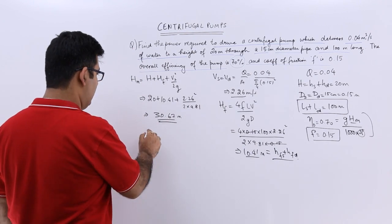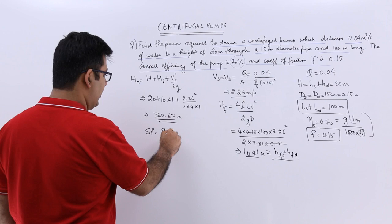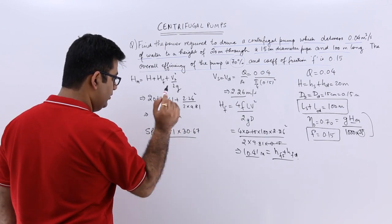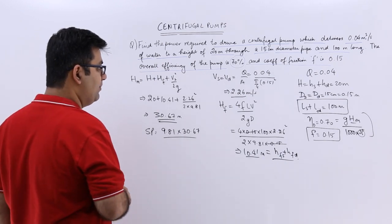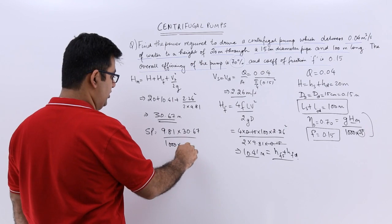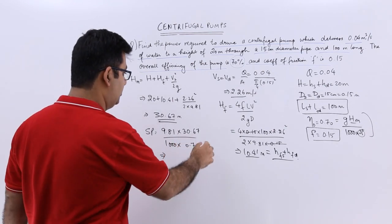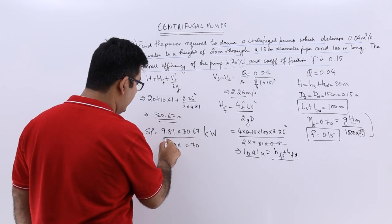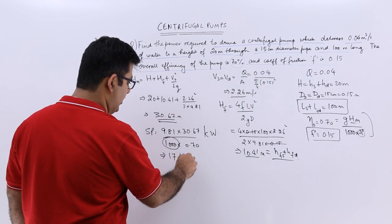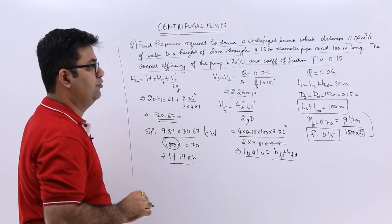Now applying the formula, the shaft power = (9.81 × Q × H_M) / (1000 × eta_O) = (9.81 × 0.04 × 30.67) / (1000 × 0.7). Because we are already dividing by 1000, this gives the shaft power in kilowatts, which comes out to approximately 17.19 kilowatts.